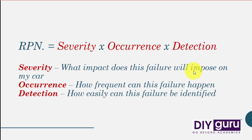RPN stands for Risk Priority Number, which is calculated by multiplication of severity, occurrence, and detection.